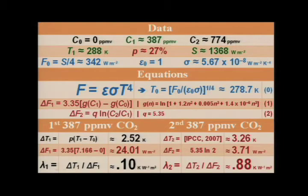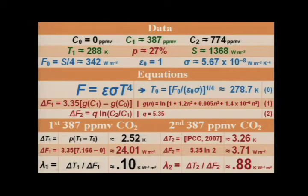Now we have to know how many watts per square meter that represents. Using equation number one — that's from James Hansen, repeated in the IPCC's 2007 document — what it shows is that 24 watts per square meter of radiative forcing produces 2.5 degrees Celsius of warming. That gives you a climate sensitivity parameter of 0.1 Kelvin per watt per square meter, rather than the 0.9 which is the IPCC's central estimate.